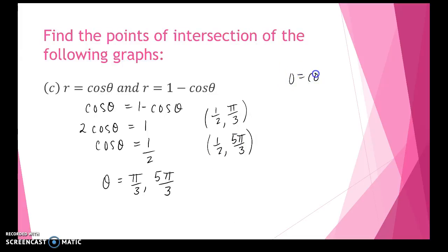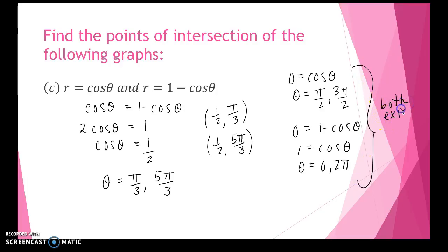So now let's check the pole. When 0 equals cosine theta, we get values for theta at π over 2 and 3π over 2. 0 equals 1 minus cosine theta. We know the cosine is 1 at 0 and 2π. So again, both functions exist when the radius is equal to 0. So we add 0, 0 as a point of intersection.